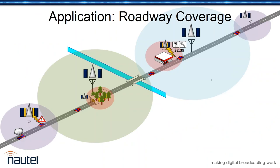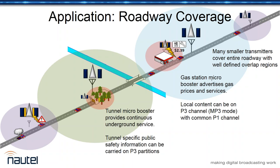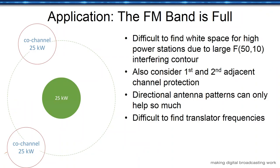One interesting SFN application is extended roadway coverage. Rather than one large transmitter, you can use many smaller ones covering an entire route. You can also have underground tunnel micro-boosters for coverage where the main doesn't reach — for safety information, for example. Each individual node can also carry some local content, such as local traffic or advertisements, breaking away from the network-wide identical content.